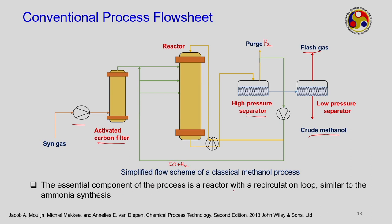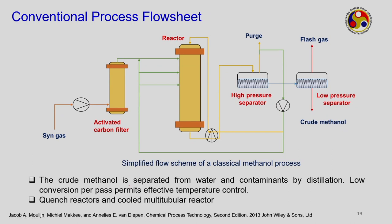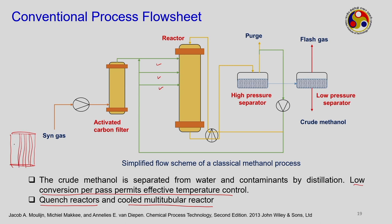The remaining stream is sent to a low-pressure separator where crude methanol is separated from flash gas. The essential feature of this conventional process is a reactor with a recirculation loop, similar to ammonia synthesis. Crude methanol is separated from water and contaminants by distillation. Due to low conversion per pass, effective temperature control is needed using quench reactors and cooled multitubular reactors.